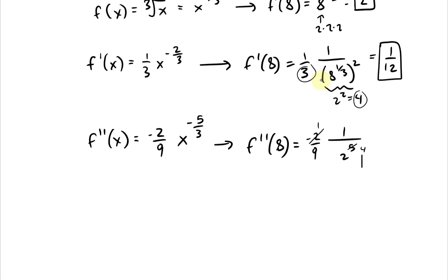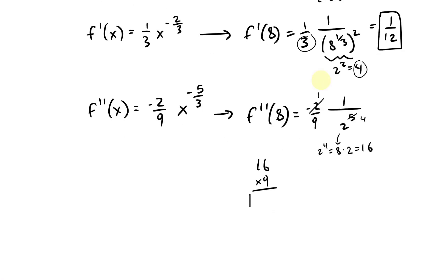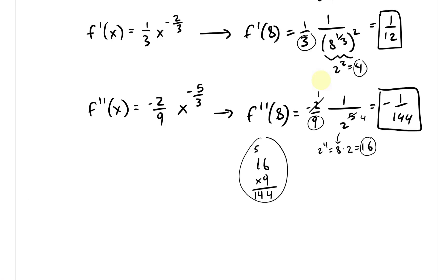Simplifying: 2^5 is 32. So we have −2 over (9 × 32). Now 9 times 32: 9 times 16 is 144 and 9 times 6 is 54, giving 9 × 16 = 144. So f''(8) = −2/288 = −1/144.